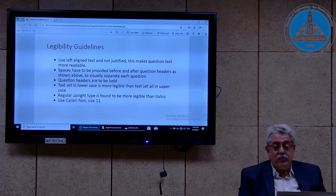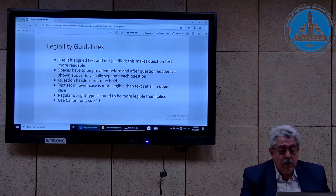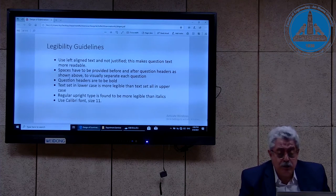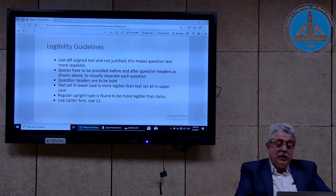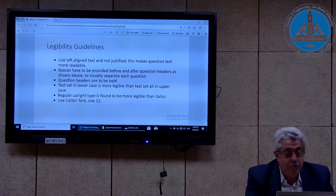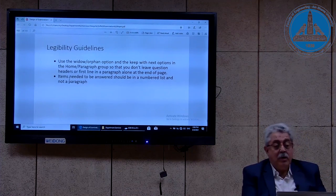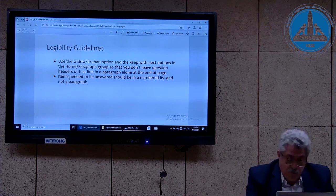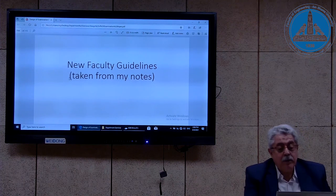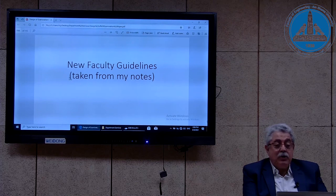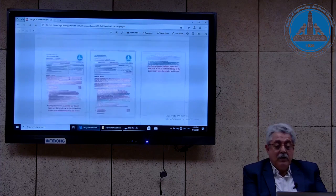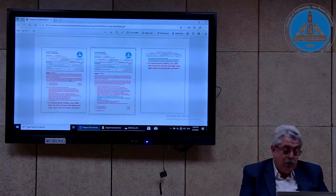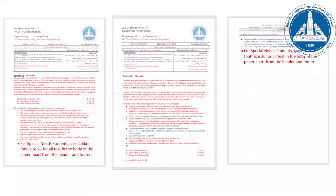Text set in lower case is more readable than text set in all uppercase. A regular upright type is found to be more legible than italics. My suggestion is to use Calibri font — one of the top ten fonts — in size 11. Use the widows and orphans option. Items needed to be answered should be in a numbered list and not a paragraph. These faculty guidelines were distributed to all professors in the Faculty of Engineering and were all derived from what was covered in this presentation.